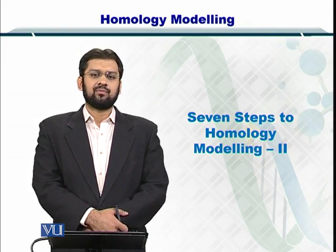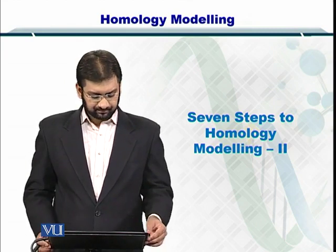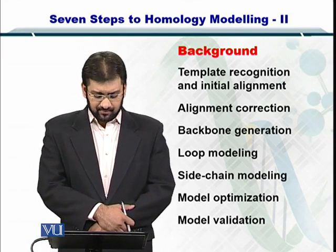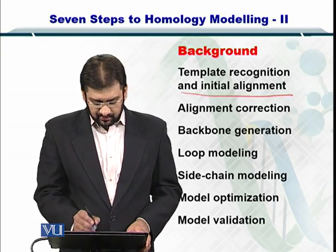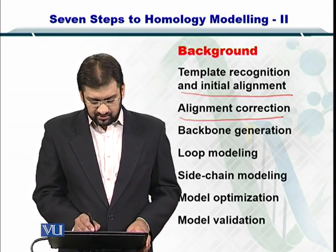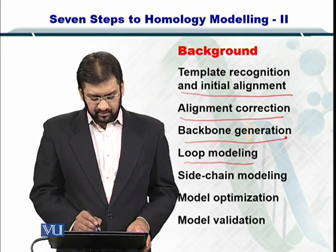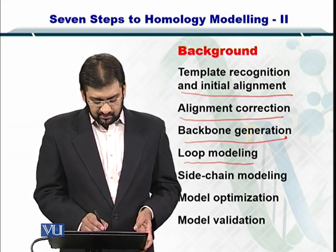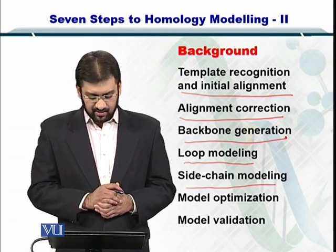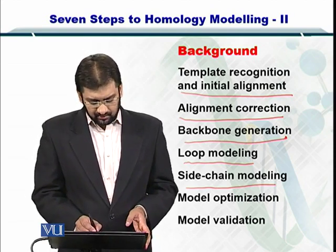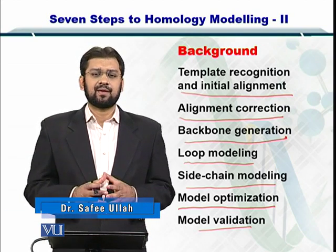We were trying to understand the homology modeling pipeline and as you now know there are seven important steps within it. Let's take a look at them to review. The first one is template recognition and initial alignment. The second is alignment correction. The third is backbone generation, that is the amino acid backbone, followed by insertion of the loop and optimizing that. Next is side chain modeling, looking at all the possible conformations in which the side chains can be inserted on the backbone. This is followed by model optimization and then validation by looking at known structures. So these were the overall seven steps for homology modeling.